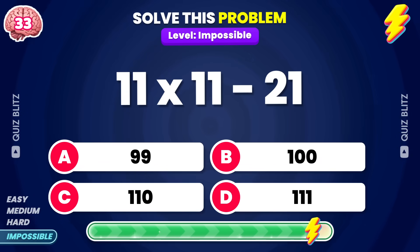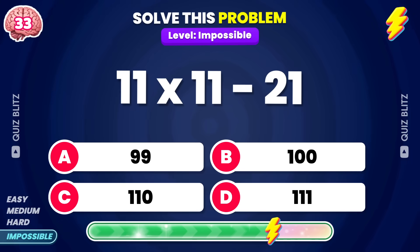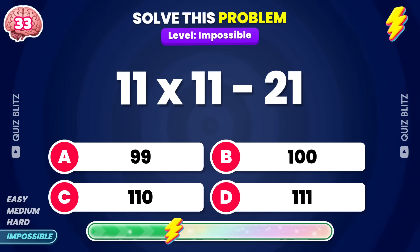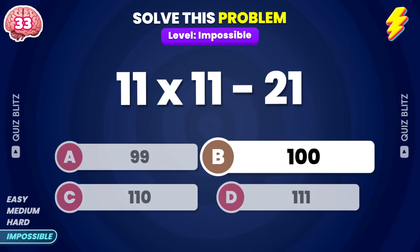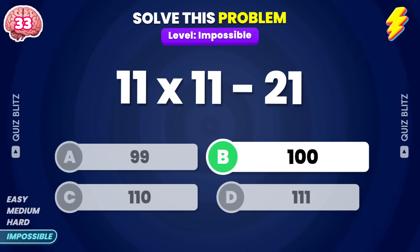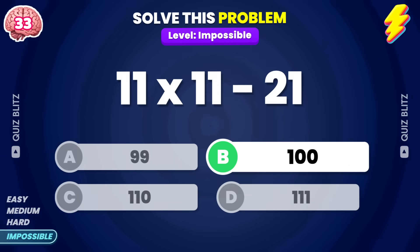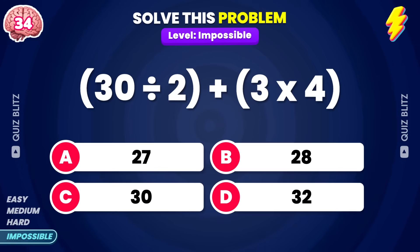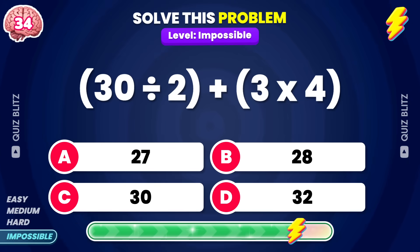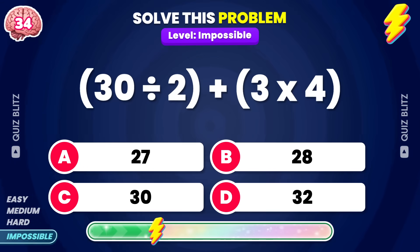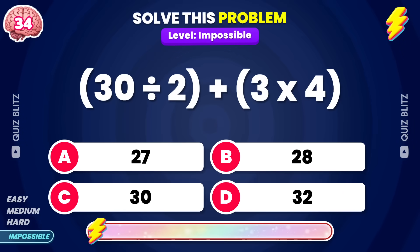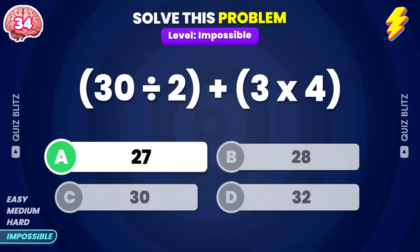11 times 11 minus 21. The answer is 100. Well done! How much is 30 divided by 2 plus 3 times 4? The answer is 27.